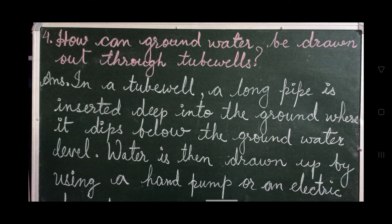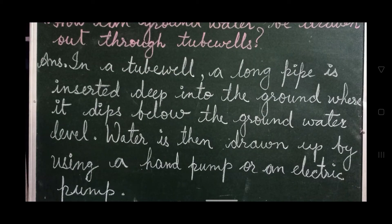Question number 4: How can ground water be drawn out through tube wells? Answer: in a tube well, a long pipe is inserted deep into the ground where it dips below the ground water level. Water is then drawn up by using a hand pump or an electric pump.